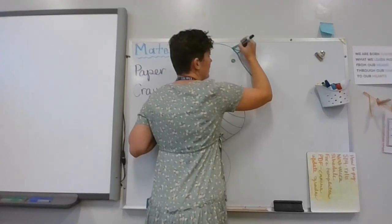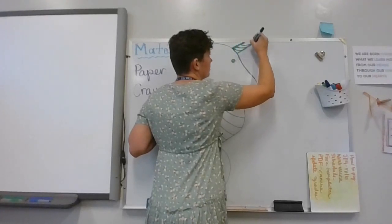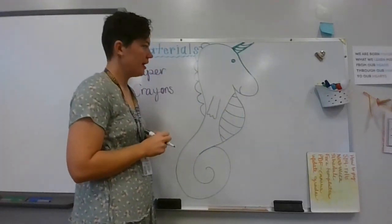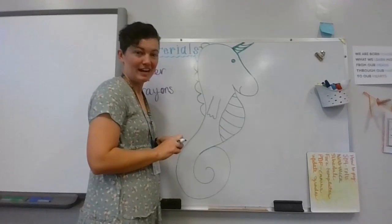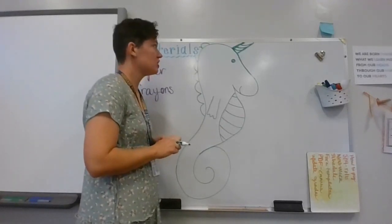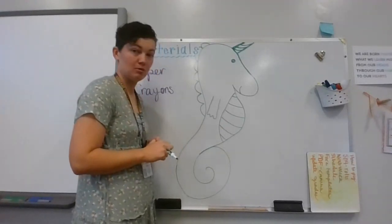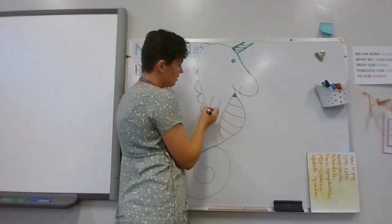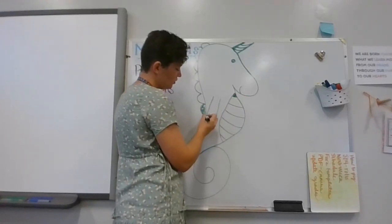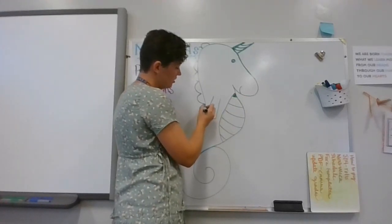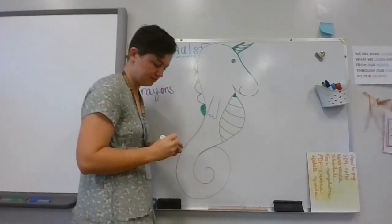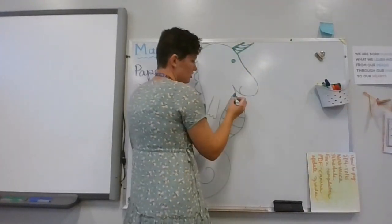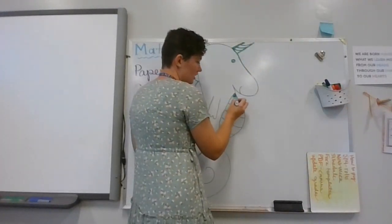What I need is some lines going up on the horn, just like that. Now you need to decorate your picture. Is your sea unicorn rainbow colors? Is each stripe a different color, and each bump on its back a different color? You decide, then color it in. I've got my greens, I'm going to move on to blues next.